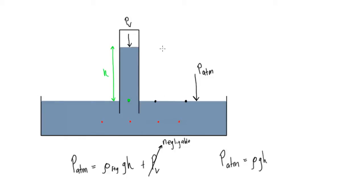This is the barometer from the last video. We figured out that the pressure at this point equals P atmosphere. Because there's a column above it with negligible vapor pressure, the atmospheric pressure also equals the pressure caused by this column of liquid.